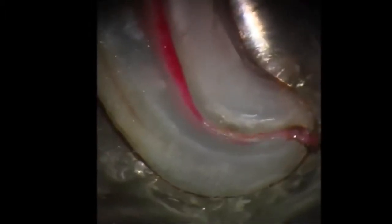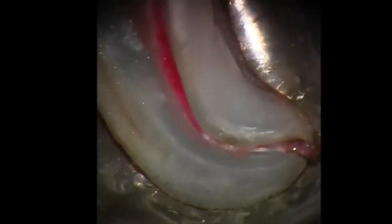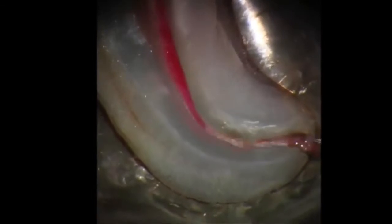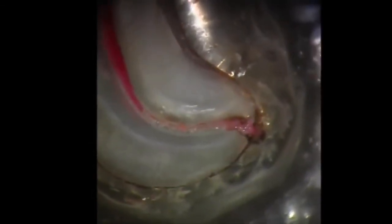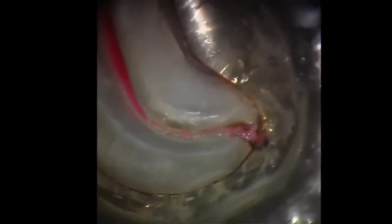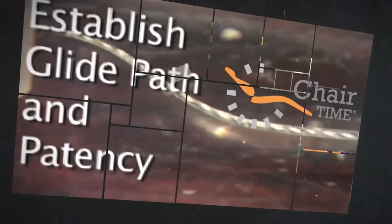Research studies have shown that the use of traditional stainless steel hand files, in the hands of both GPs and specialists, tend to deviate from the original canal. The use of the rotary 0.02 path files is a proven method to safely establish the desired glide path.